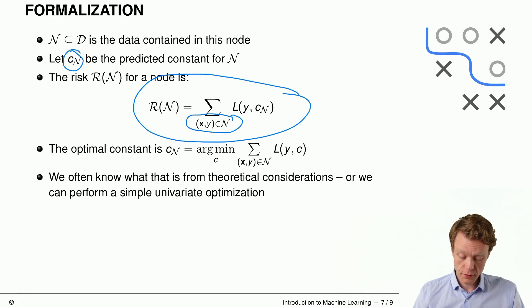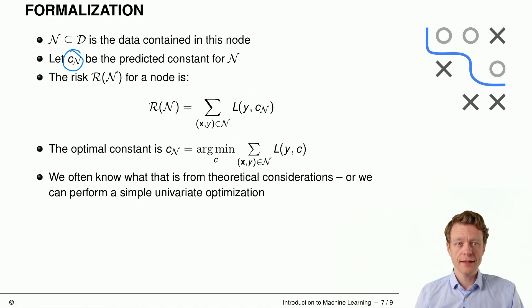The optimal constant is then derived by the argmin of this risk with respect to c. So we are looking for the constant that minimizes this sum here. And then this is the optimal constant model.